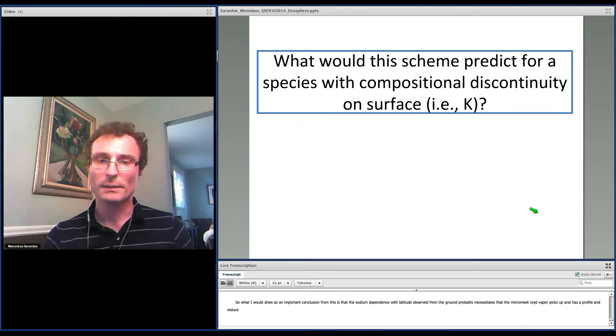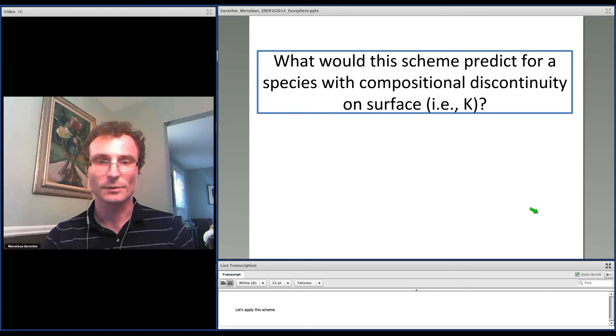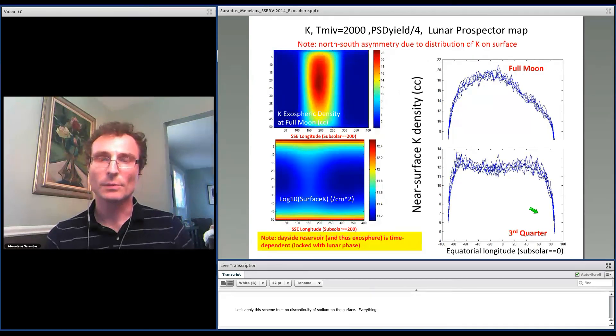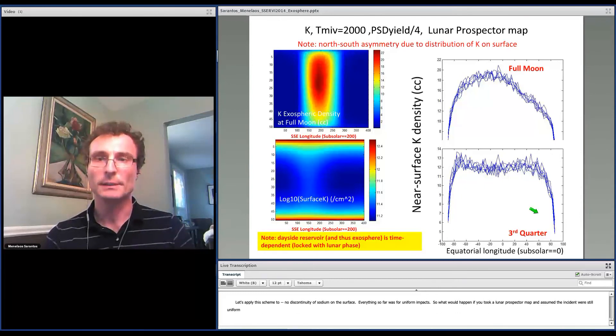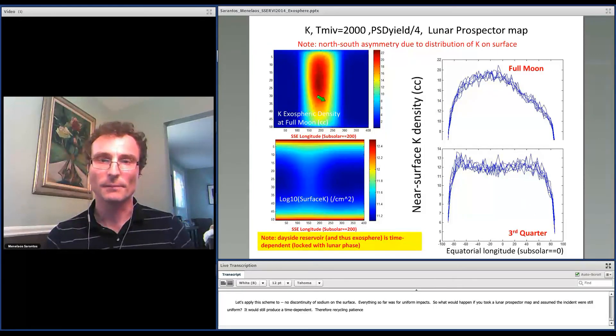So let's apply this scheme to potassium. I've assumed no discontinuities of sodium on the surface. Everything that I showed you so far was for uniform impacts. So what would happen if you actually took the lunar potassium surface map and assumed that the incident micrometeoroids were still uniform? You would still produce, though, a time-dependent now vapor and recycling pattern. And we see a snapshot here. This would be exospheric density. The peak gets about to 22 per cc, which is approximately what's measured from the ground, maybe 14 per cc.